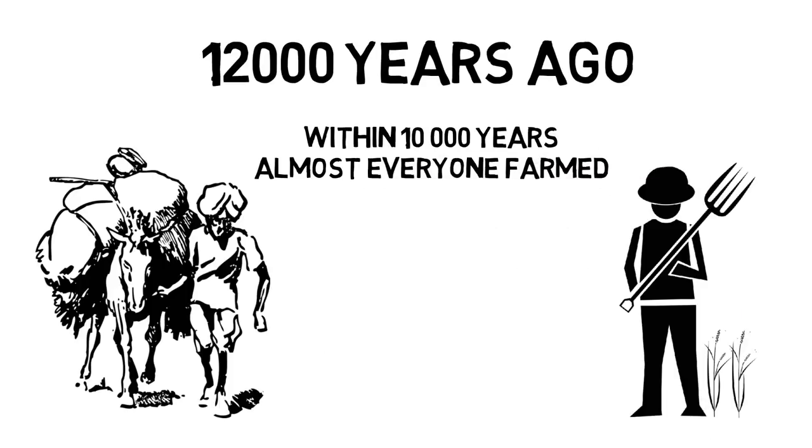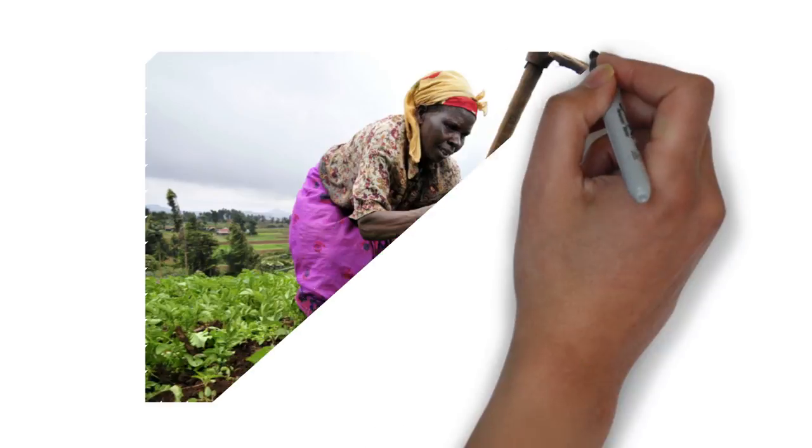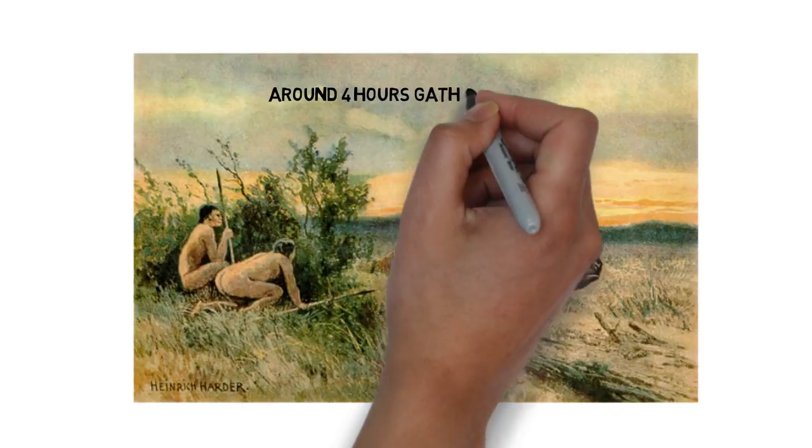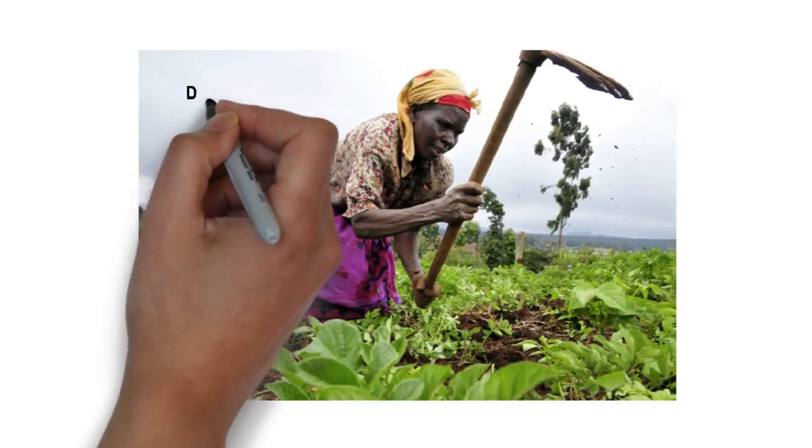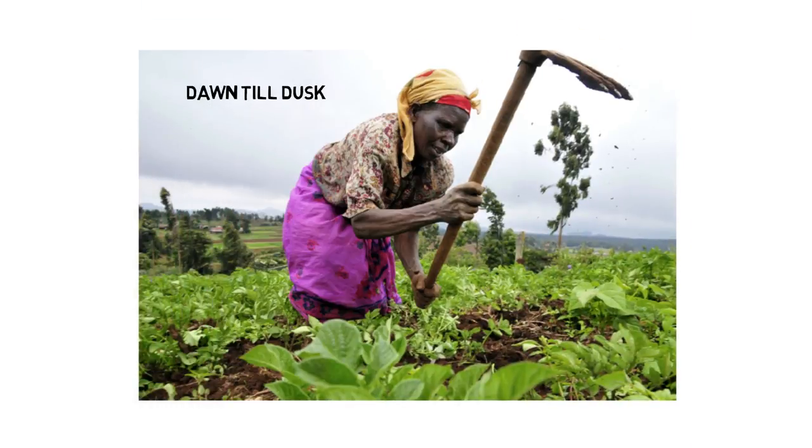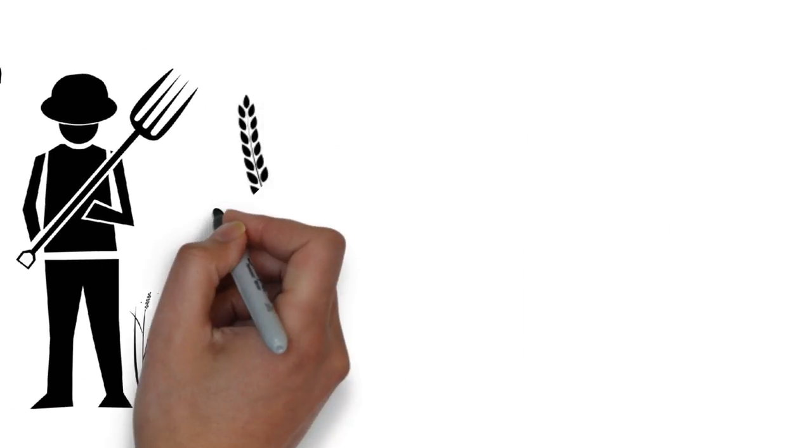Farming may be taken for granted today, but it is difficult to see why our early ancestors favored it over the hunter-gatherer lifestyle. Agriculture is far more time-consuming. Whereas a hunter-gatherer needs to spend about four hours collecting enough food, a farmer must work from dawn till dusk on his field.